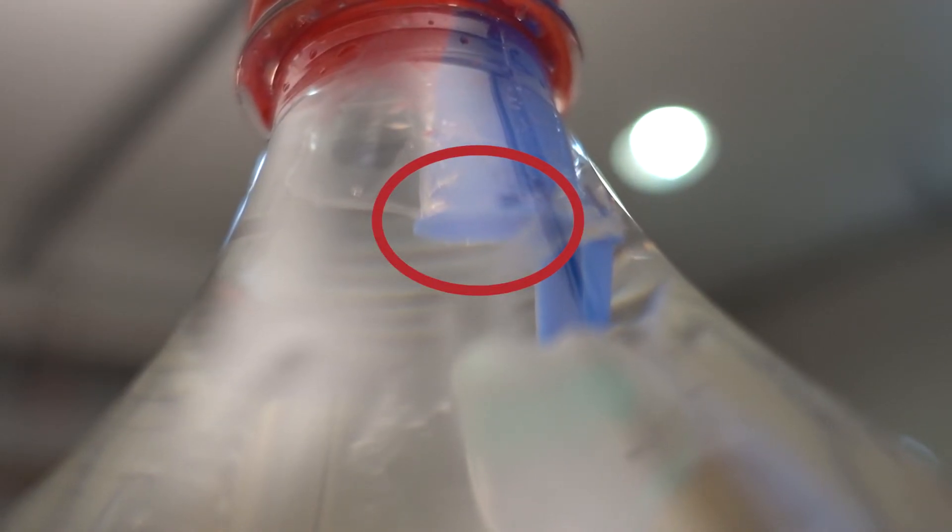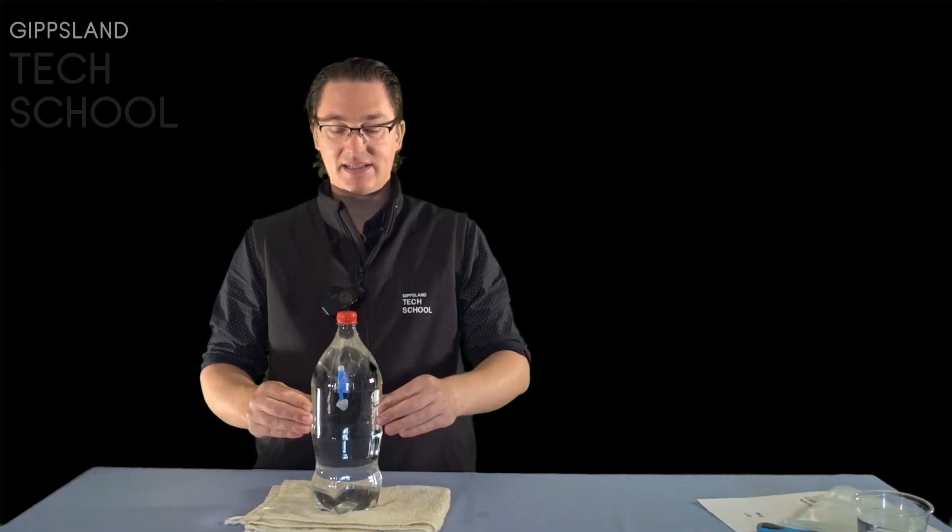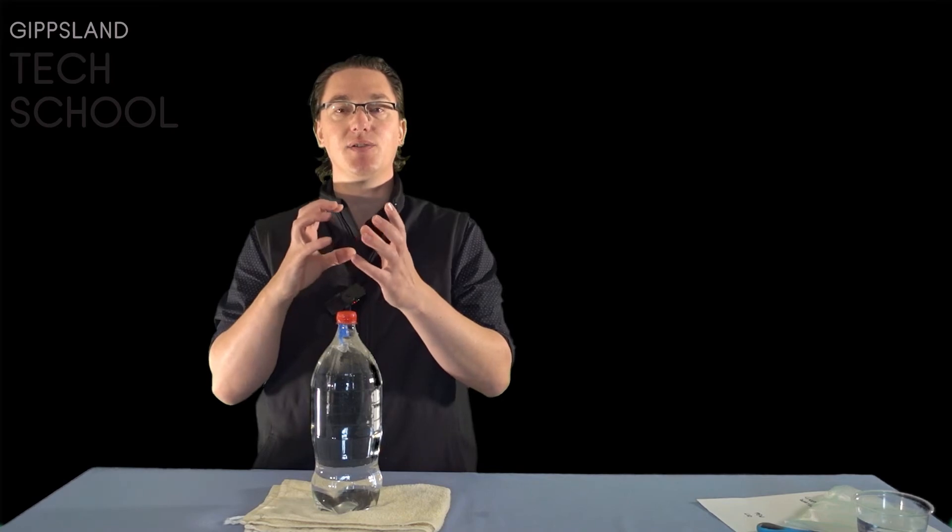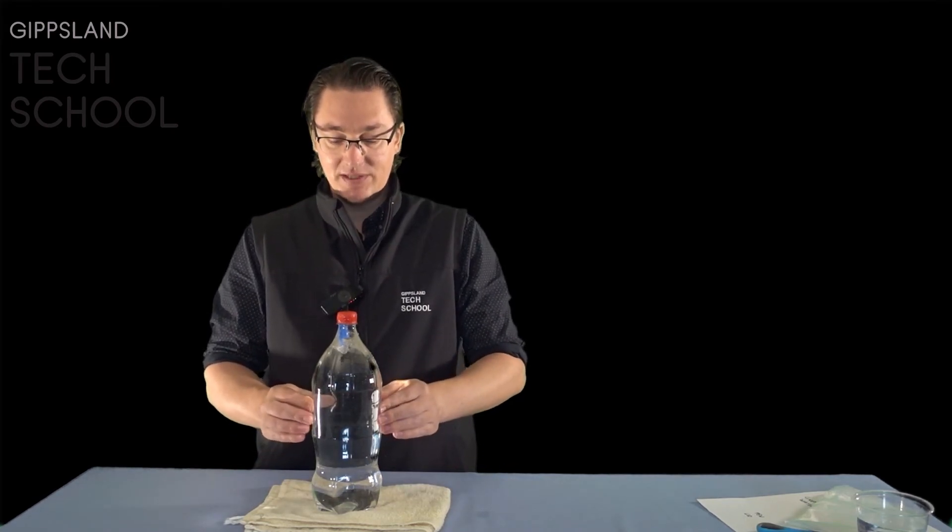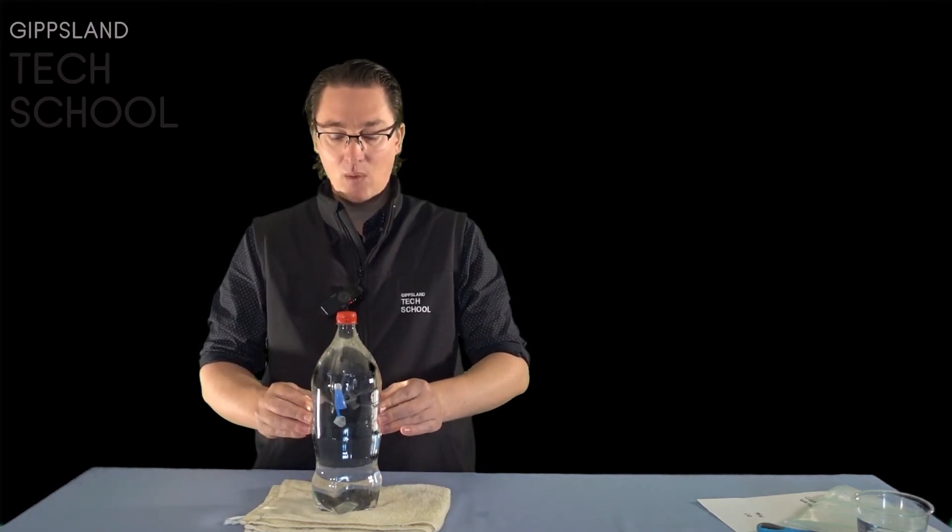But what we do have is a small pocket of trapped air in our pen lid, and air is much easier to squash together. So when I squeeze it and reduce the amount of space, that air pocket gets squashed down and gets smaller. What that means is that it loses some of its buoyancy, or its ability to float, because it's all squashed together, and as we do, our pen lid drops down. When I release the pressure and let it go, that air bubble can expand again, increasing its buoyancy, and our jellyfish goes shooting back up to the top.